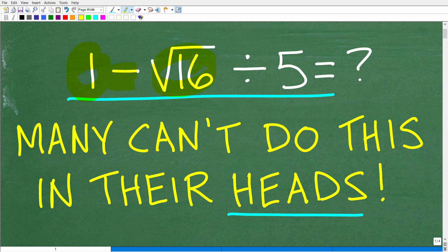We have 1 minus the square root of 16 divided by 5. What is the answer?